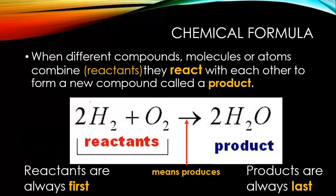Chemical formula. This is where it gets tricky. When different compounds, molecules, and atoms combine, these are the reactants. They react with each other to form a new compound called a product. Let's look at this diagram. We've got molecules here reacting with another molecule here. These are the reactants. We know they're reactants because they come before the arrow symbol. The arrow symbol means produces. What these two reactants produce when they react with each other is a product. The product comes last, reactants are first.